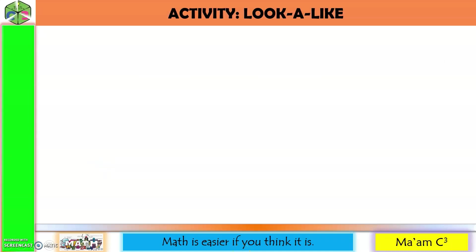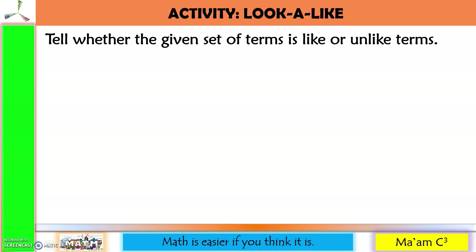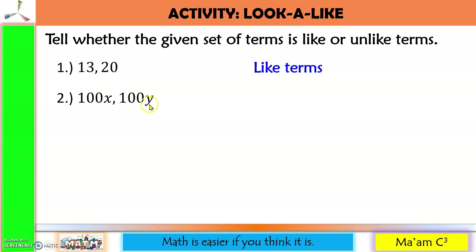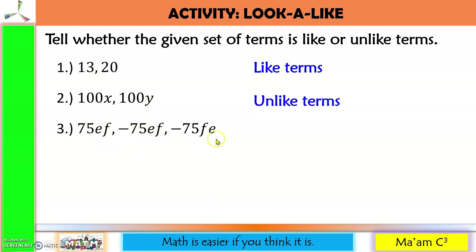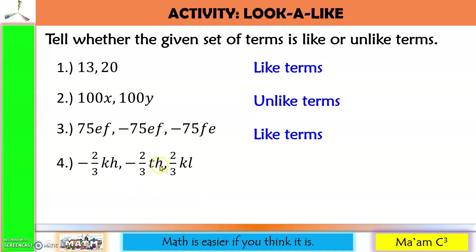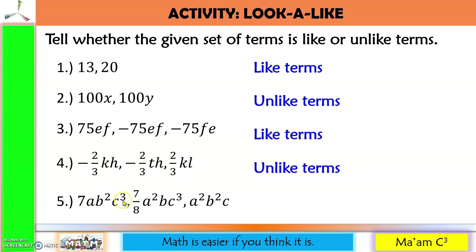Let us have an activity: Look Alike. Tell whether the given set of terms is like or unlike terms. Number 1: both are constants, so these are like terms. Number 2: x and y are different variables — unlike terms. Number 3: EF, EF, FE — just the same, like terms. Number 4: KH, TH, KL — unlike terms. Last one: AB squared C cubed, A squared BC cubed, A squared B squared C — nothing is the same, so unlike terms.